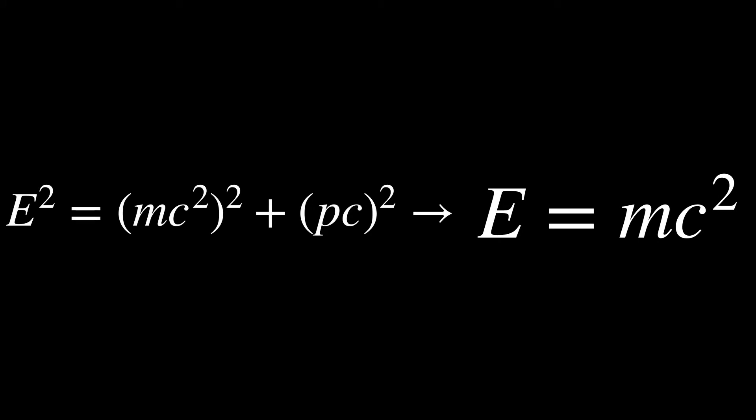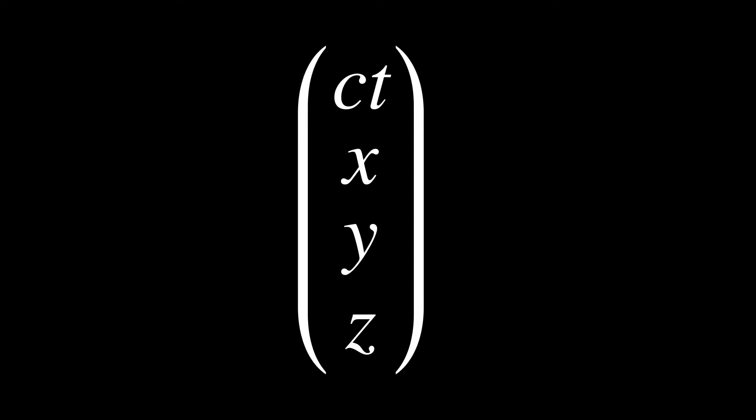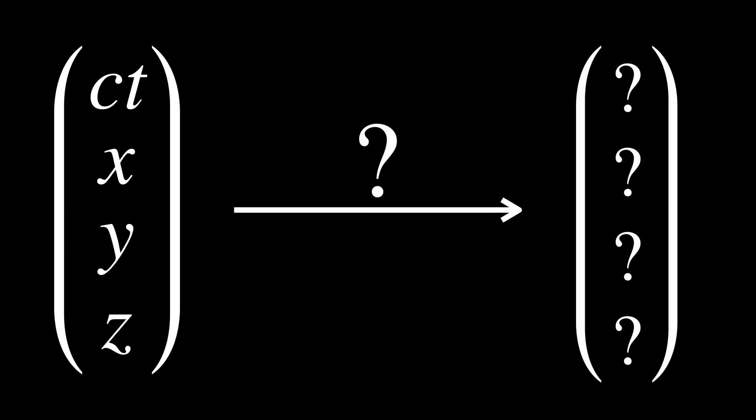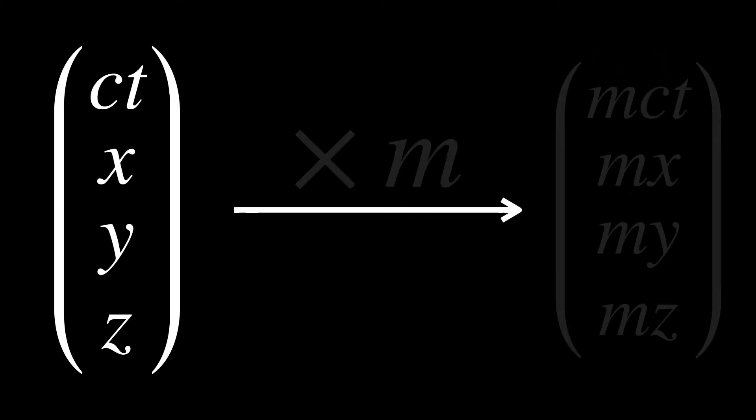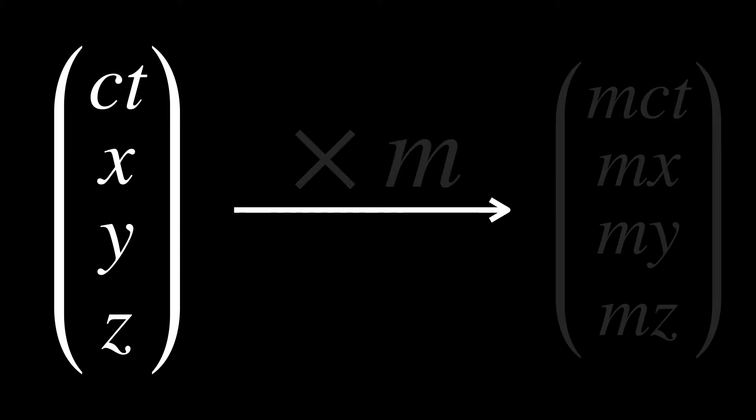To do that, we're going to consider the only four-vector we know about right now, which is four-position. And we wonder, are there any other four-vectors? Well, of course, if you multiply this four-vector by a scalar invariant quantity, then your new vector will also satisfy the properties of a four-vector. Note, I'm very suggestively using m here as my variable because mass is an example of such a quantity.